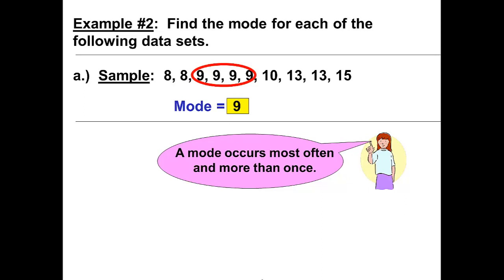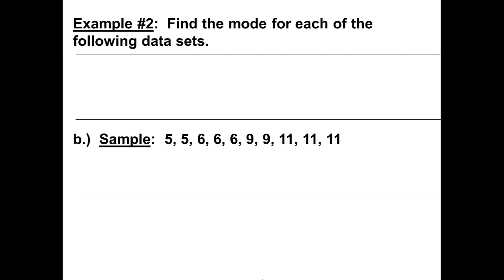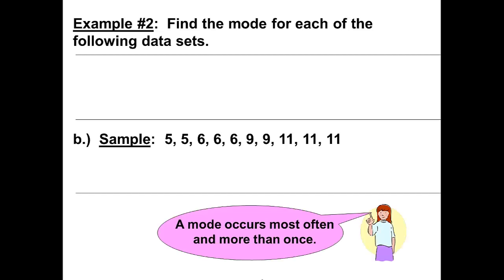The mode is nine. Let's look at sample B. We have two fives, three sixes, two nines, and three elevens. A mode occurs most often and more than once. There are three sixes and three elevens. Therefore we have two modes. Both the six and the eleven are modes. This sample we could say is bimodal, meaning it has two modes.